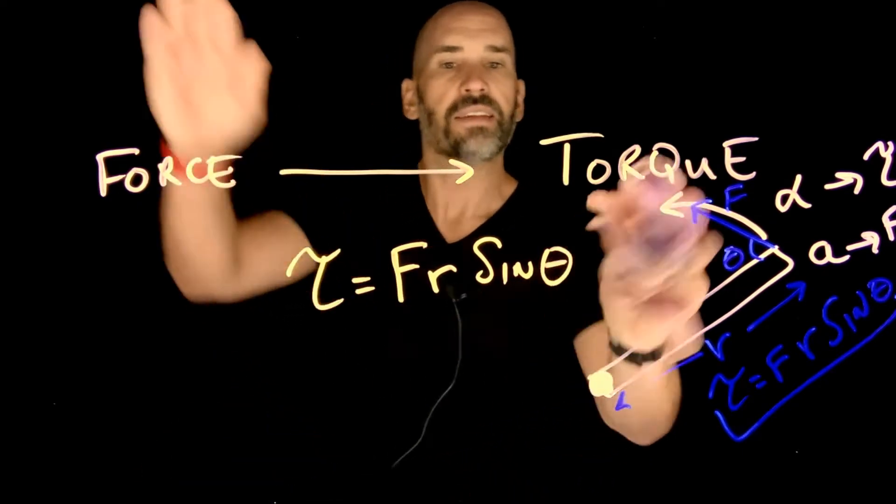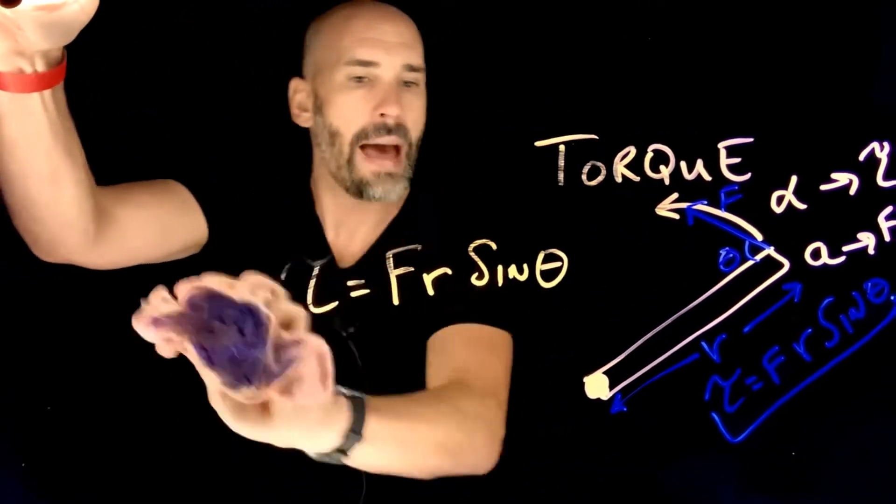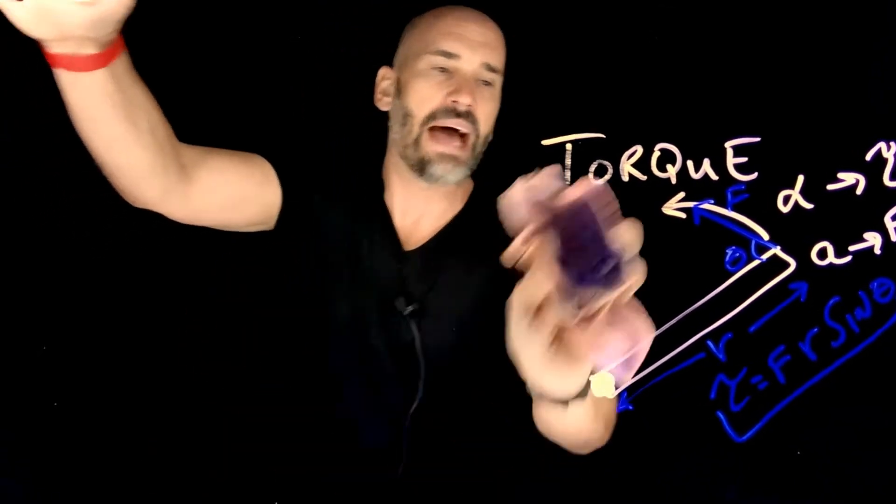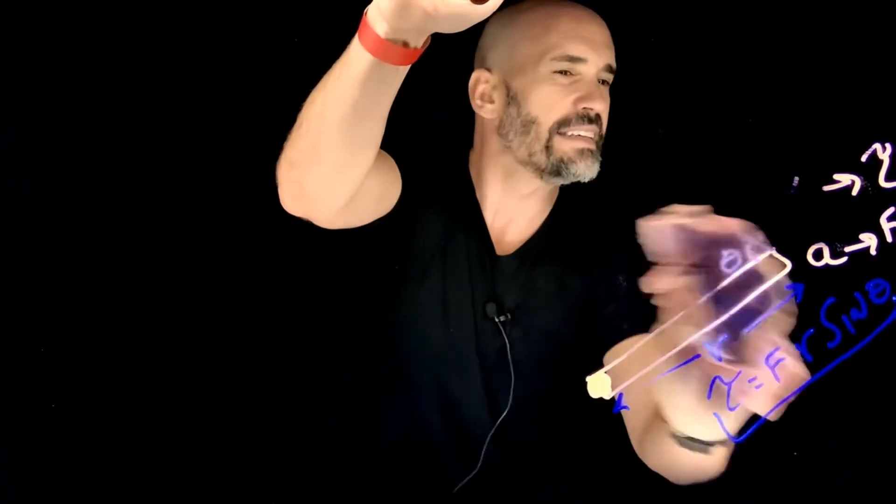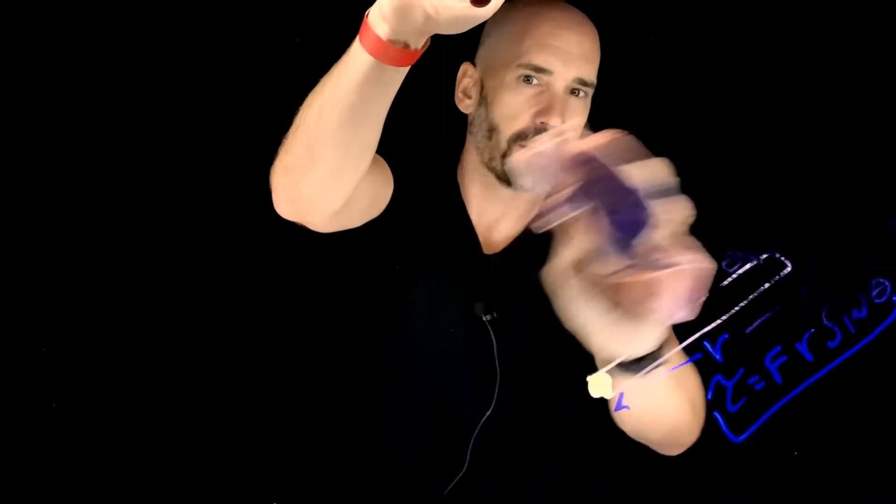Turns out that there's also an interesting analogy for mass as well. Mass in the rotational world is not just M, because not all masses are created equally when it comes to rotation.